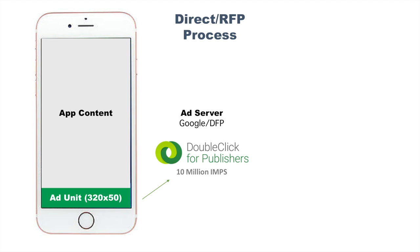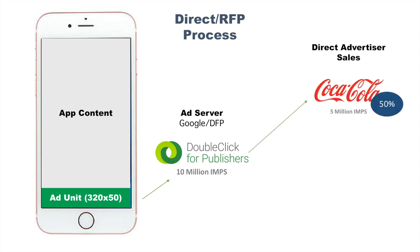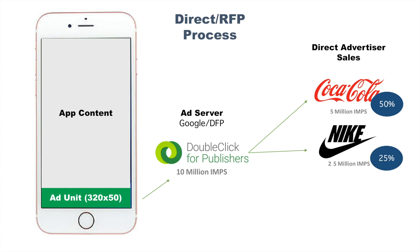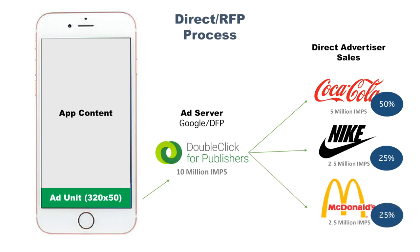So I'm going to go out directly to an advertiser and try to sell to them. Let's say I go to Coca-Cola and I convince them to buy 5 million impressions every month — I've just sold 50% of my ads to one advertiser, but I still have 5 million more to go. So I get in front of Nike and they agree to buy 2.5 million. Now I've sold 75%. And then lastly I go to McDonald's and they agree to buy 2.5 million impressions. Now I've done a direct deal with 3 advertisers and sold 100% of my ads for the month.